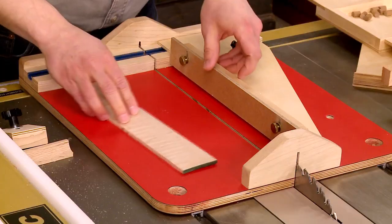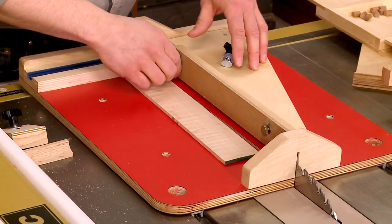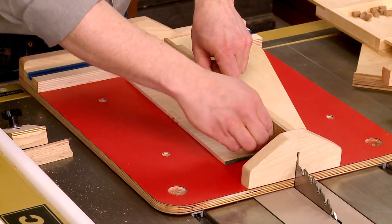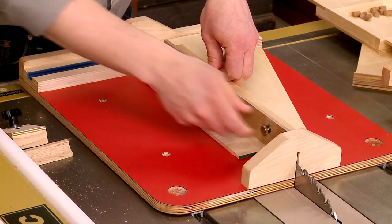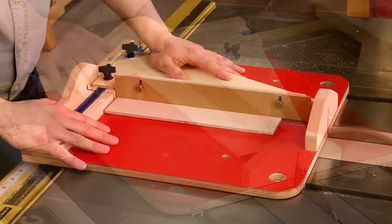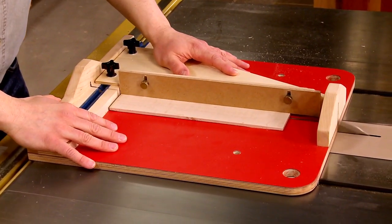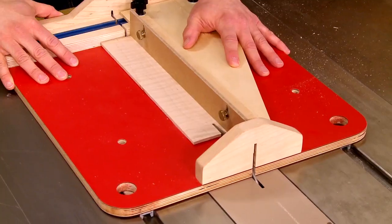What sets this one apart is that there's a hardboard hold-down on it, so you can loosen it up, slide your workpiece in place, and lower the hold-down over the top. Now, when you make the cut, the workpiece is held secure, and it isn't going to shift.